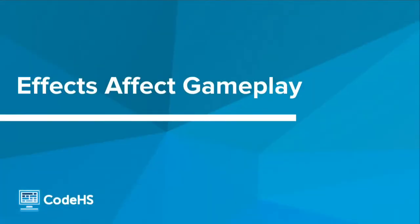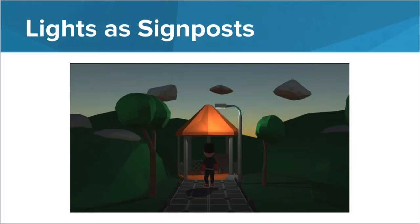Hi! In this lesson, we're going to look at how lighting, audio, and particle effects impact gameplay. Lights in a game environment can help players out. They might point to different areas of interest or serve as signposts, a way of giving players information and hints.